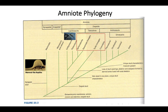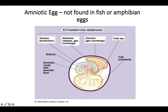Here's a cladogram showing all the amniotes. Mammals are amniotes, all reptiles are amniotes, all birds are amniotes, and we believe dinosaurs were also amniotes — though they are now extinct. What you really need to know is what it means to have an amniotic egg. Amniotic eggs are not found in fish or amphibians. For your homework, you need to identify the amnion, the allantois, the chorion, the yolk sac, and the outer shell.